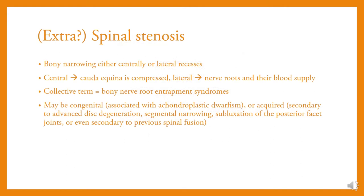Spinal stenosis involves bony narrowing either centrally or in the lateral recesses. Centrally, the cauda equina is compressed; laterally, nerve roots and their blood supply are affected. It may be congenital or acquired due to advanced disc degeneration, segmental narrowing, subluxation of the posterior facet joints, or secondary to previous spinal fusion.